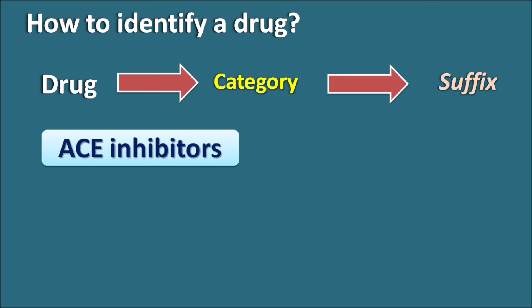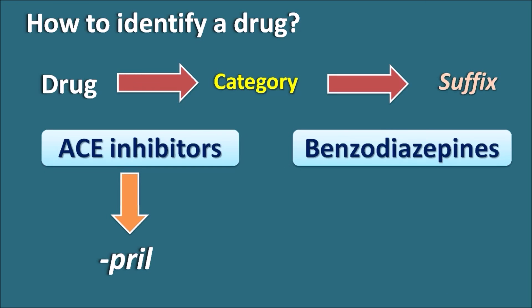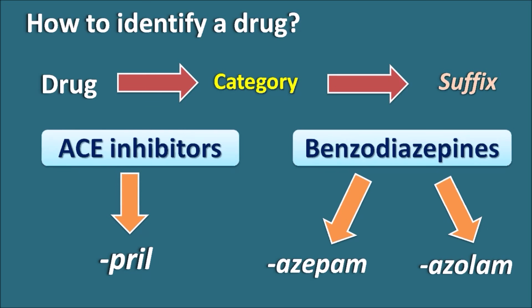For example, we have drugs like ACE inhibitors. If a drug has the suffix '-pril', you can easily say that it is an ACE inhibitor, and identify the drug immediately by seeing its suffix. Sometimes a drug category like benzodiazepines can have two types of suffixes — for example, '-epam' and '-azolam'. In such categories, we remember two or more suffixes. But many drugs belong to one category with a unique suffix, which is the best tool to identify the drug and its category. In this video, we will cover 40 drug categories with unique suffixes.